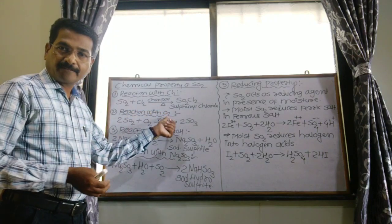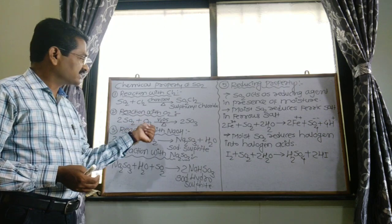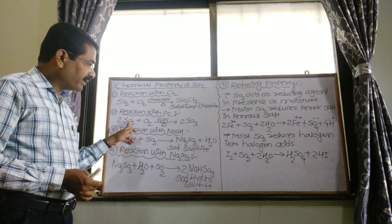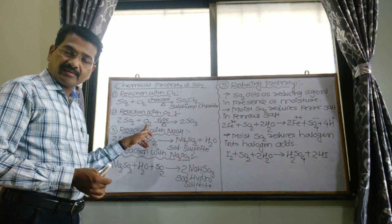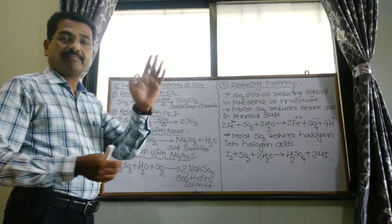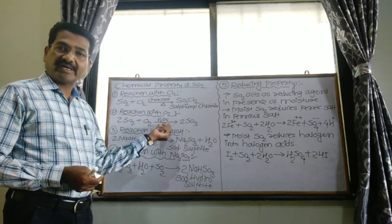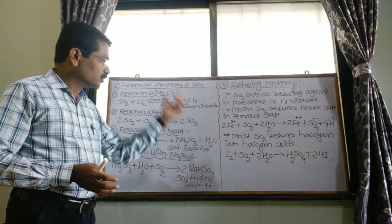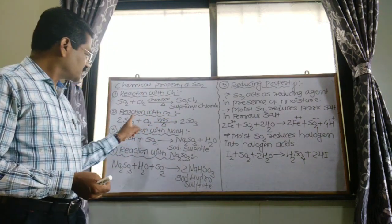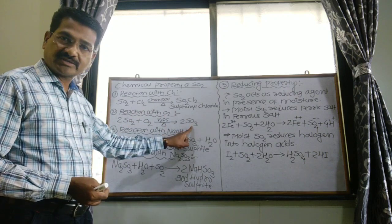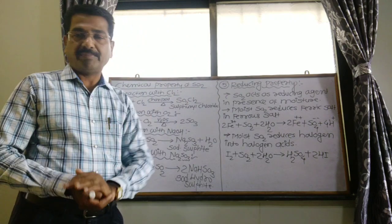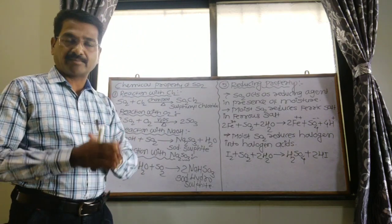Second reaction: with oxygen, that is the burning of sulfur dioxide in the presence of air. When sulfur dioxide is burnt in air in the presence of catalyst V2O5, vanadium pentoxide, it produces sulfur trioxide. Conversion of sulfur dioxide into sulfur trioxide using vanadium pentoxide is the second chemical property.